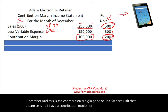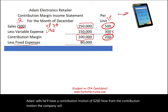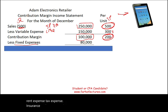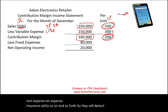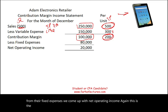From the contribution margin, the company deducts fixed expenses such as rent, tax, insurance, and utilities. Deducting fixed expenses from contribution margin gives us net operating income. This is the contribution margin income statement you need to be familiar with. The contribution margin is critical because it's needed to cover fixed expenses — without covering them, there is no profit.